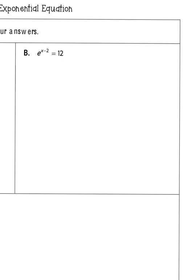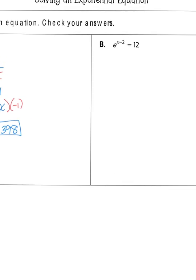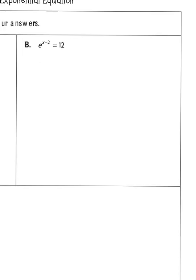For part b, you want to isolate the exponential part. Here, the exponential part is already by itself, so we can go straight to log form: natural log base e of 12 equals x minus 2. Adding 2 to both sides: x equals the natural log of 12 plus 2. That's the exact answer. Using a calculator, x is approximately 4.485.